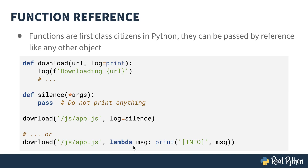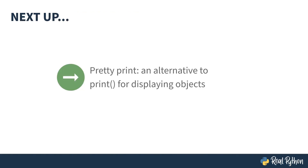You can also use lambdas, which are anonymous functions inside of Python. This allows you to create print passing in specific things like a prefix that says info, changing the behavior of how the reference function log gets called inside of the download method. Python also has a prettyPrint method, which is useful for displaying objects such as dictionaries.